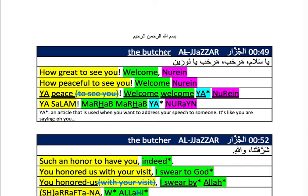The butcher says: 'ya salam, marhab marhab ya Nureen' — which translates to 'how great to see you, welcome Nureen.' So how it was actually said: 'ya' is an article used when you want to address your speech to someone, like saying 'oh' or 'hey.' When I say 'ya Muhammad,' that means I'm talking to Muhammad, so Muhammad will pay attention.